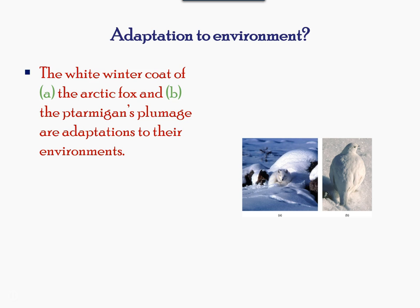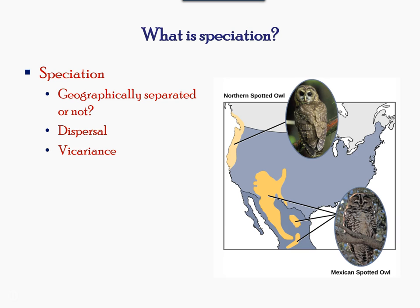Another evidence of evolution, as seen in the image here, is camouflage: the arctic fox and the bird survive during winter by blending in with snow and ice. Another mechanism of evolution is speciation — the formation of two species from one original species. The northern spotted owl and the Mexican spotted owl inhabit two different geographical regions with different climates and ecosystems.